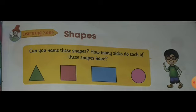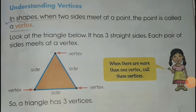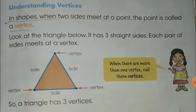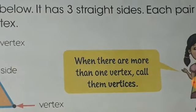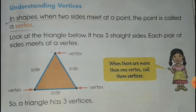Dear students, we know what is meant by the side of any shape. But today we will learn the other property of shapes, that is vertex. In shapes, when two sides meet at a point, the point is called a vertex. When there are more than one vertex, call them vertices. The plural of vertex is vertices.